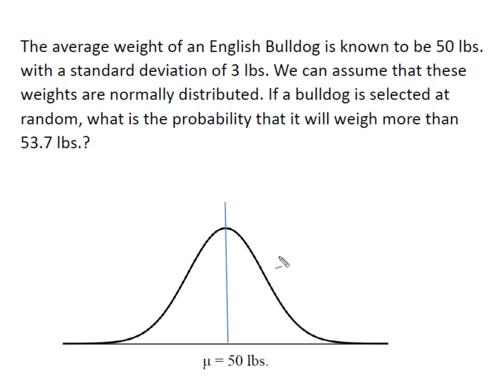We're going to find our value of x here on the curve, and x is going to be our 53.7 pounds, and we want the probability that it weighs more. So we're looking for this area under the curve or this small tail piece.